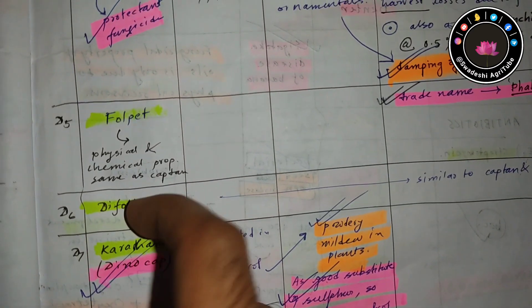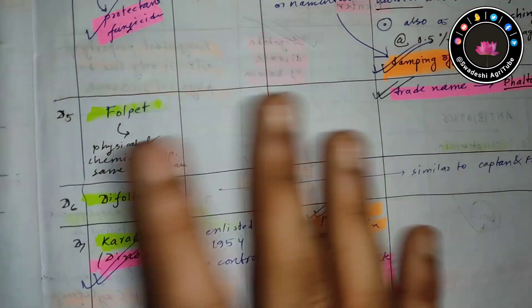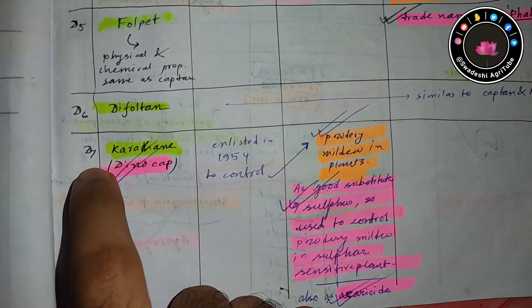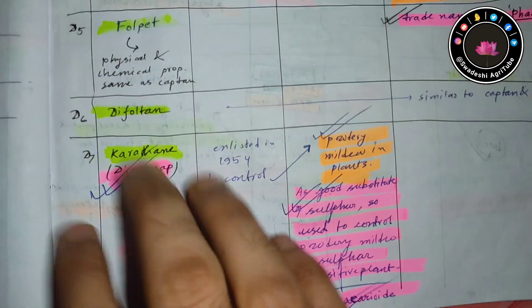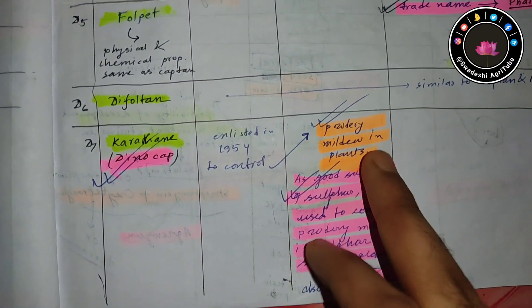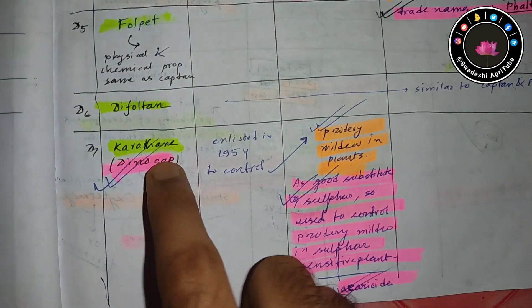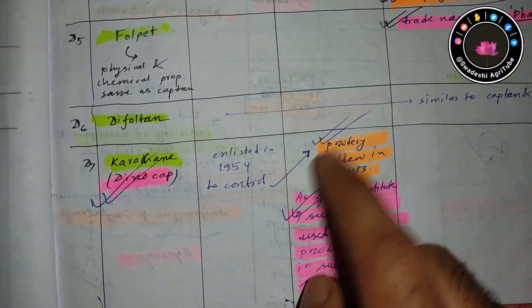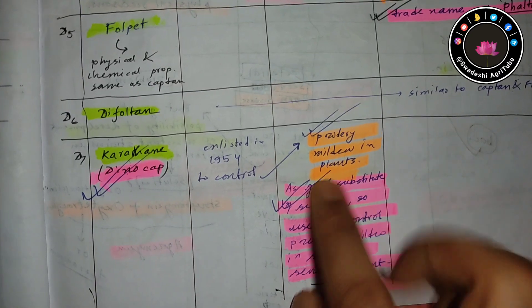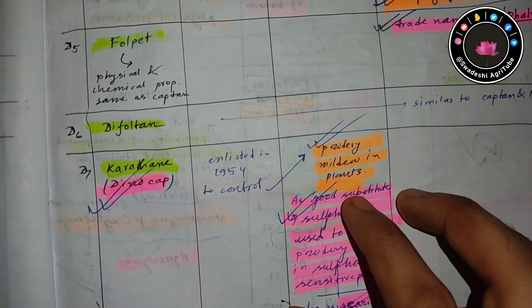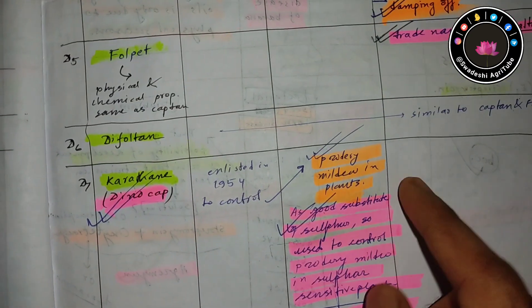The sixth one is karathane. Karathane is very much important because it can control powdery mildew very well. Suppose there are some plants which are actually sulfur sensitive, so you cannot use sulfur-containing fungicides that will be harmful for them.